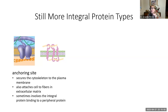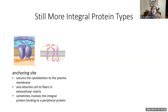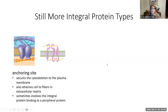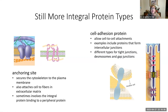Anchoring site proteins connect the cytoskeleton — the small filaments inside the cell — to the membrane, giving the cell shape and sturdiness. On the outside of the cell, where we have the extracellular matrix with its ground substance and protein fibers, those extracellular protein fibers can also be attached to these anchoring proteins. Sometimes peripheral proteins are also involved in attaching to cytoskeletal elements, as shown in the picture.